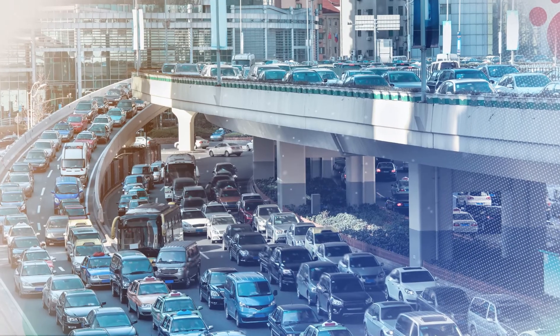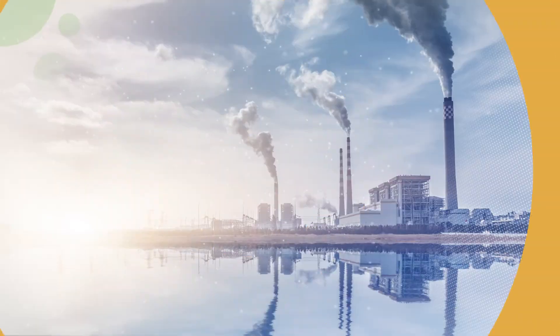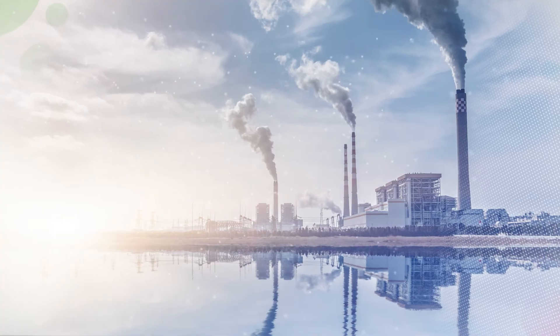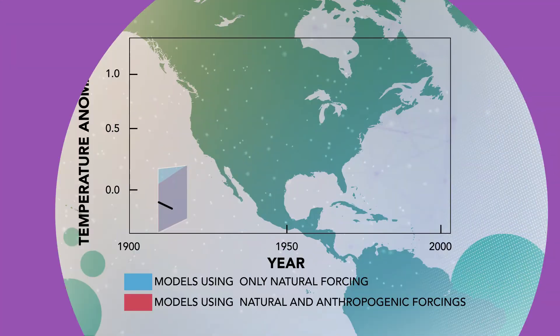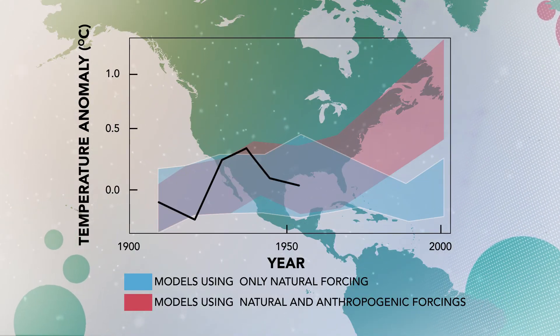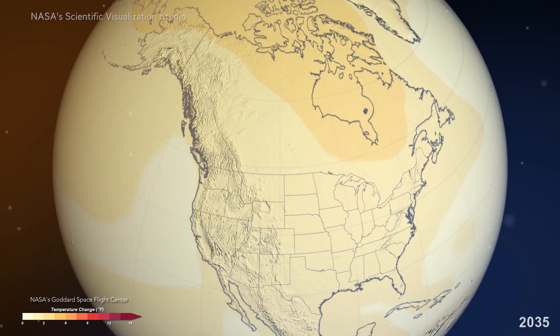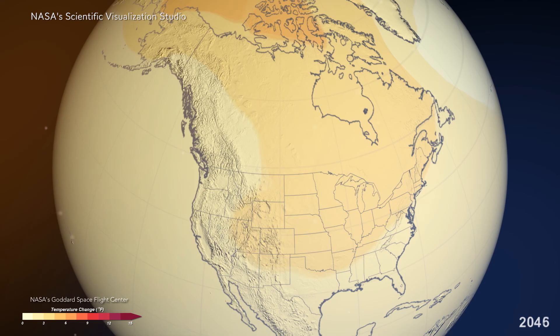We also use climate models to measure the influence humans have on our climate. We do this by running the models with and without man-made greenhouse gas emissions in what are called fingerprint studies, and then compare the similarities and differences in the results. Finally, and perhaps most importantly for decision-makers, we can use climate models to project what our future climate may be. Global climate models are the most important tools for showing us that our future climate depends on the decisions we make today.